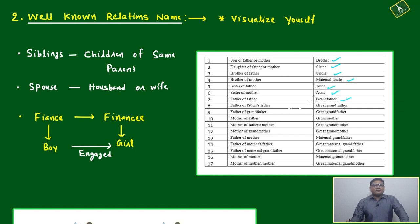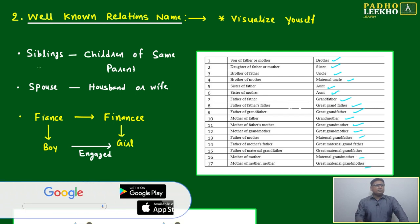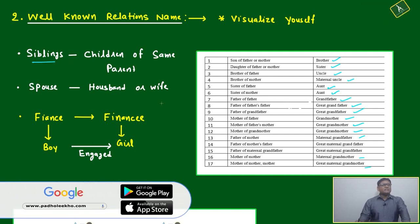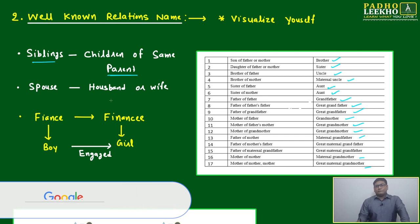Father of father is grandfather, great-grandfather, grandmother, great-grandmother, maternal grandfather - these all we know. Few things we don't know or are not listed here. Siblings means children of same parent. Spouse means husband or wife.